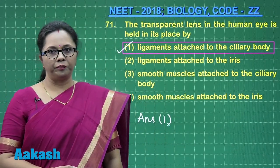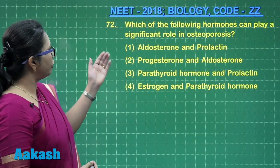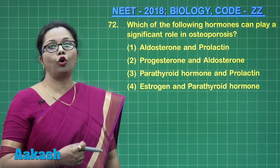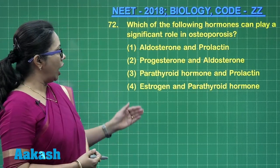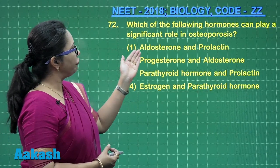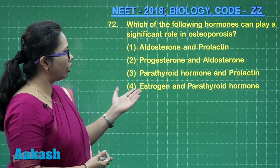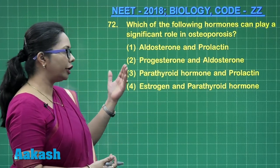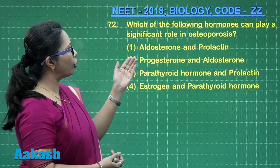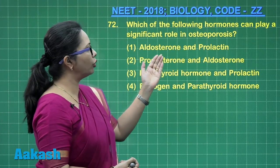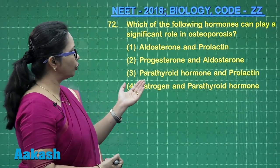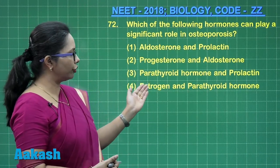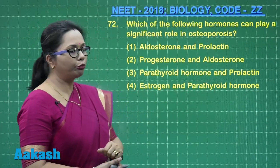Next, question 72: which of the following hormones can play a significant role in osteoporosis? Aldosterone is a sodium-retaining hormone. Prolactin is responsible for milk secretion. Progesterone is the pregnancy hormone. Parathyroid hormone is certainly related to osteoporosis, but prolactin is not.